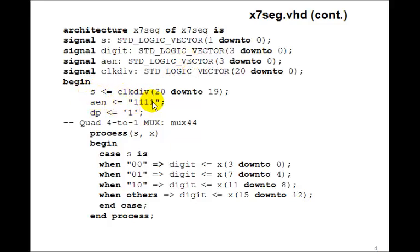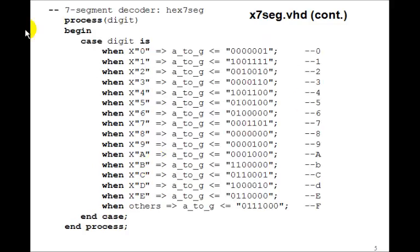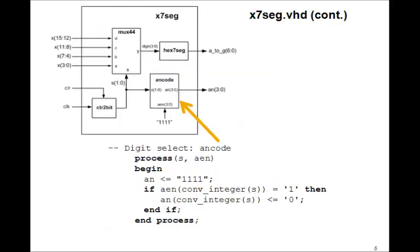We'll set A enable to 1, 1, 1, 1, decimal point to 1. This is our quad 4 to 1 mux that we had in the last lesson. We're going to do it exactly the same way, just make these processes. Here's the 7-segment decoder. We still have to put the AN code module in.